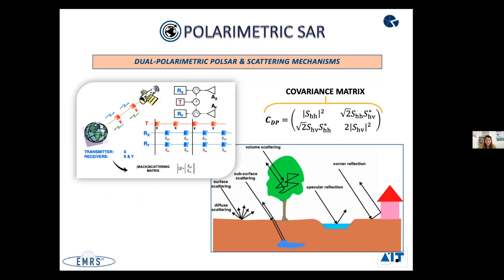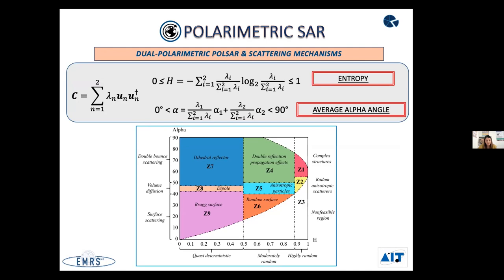To process polarimetric SAR data, we consider a dual polarimetric system and use the covariance matrix to describe the measurements. It is then possible to relate these measurements to fundamental scattering mechanisms using two synthetic parameters: entropy and the mean alpha angle. Entropy represents the degree of randomness associated with the scattering of the scene, and the mean alpha angle is the average scattering angle at which the signal is received. Based on these two parameters, it is possible to develop an automatic classifier that identifies different regions according to their scattering mechanisms.